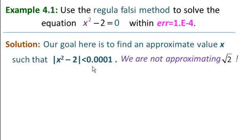As opposed to in the bisection method when we were approximating the square root of 2. Now our numbers all look like the square root of 2, but our goal is different.